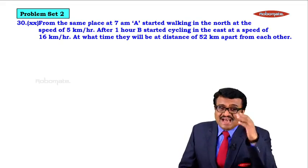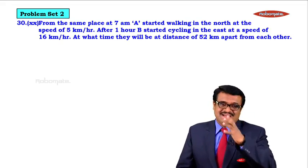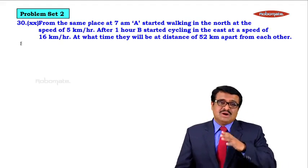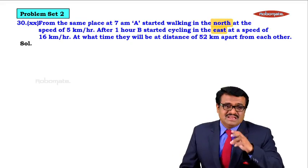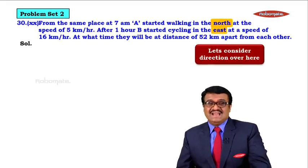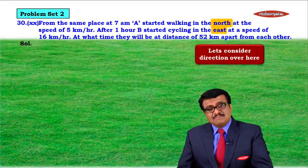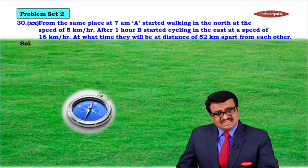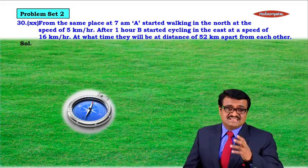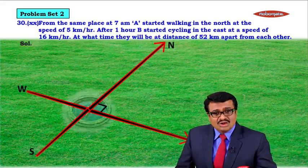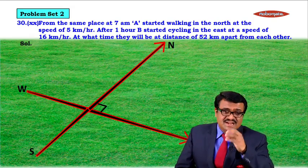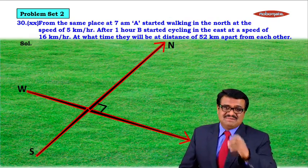At what time — so the question is about time. But before getting into what is to be found, notice that when we read the problem, there was something called north and east. There are directions in the sum, so let us understand directions. North and east are two perpendicular directions. Now let us read the problem part by part, step by step.